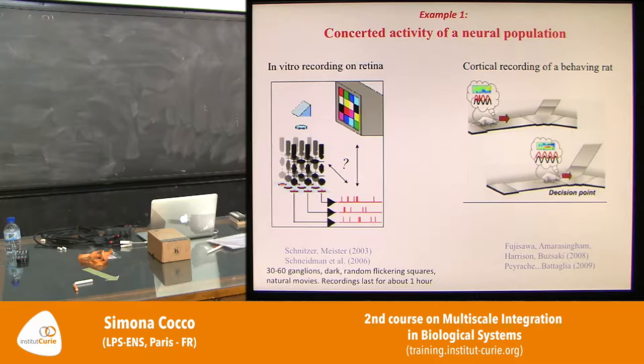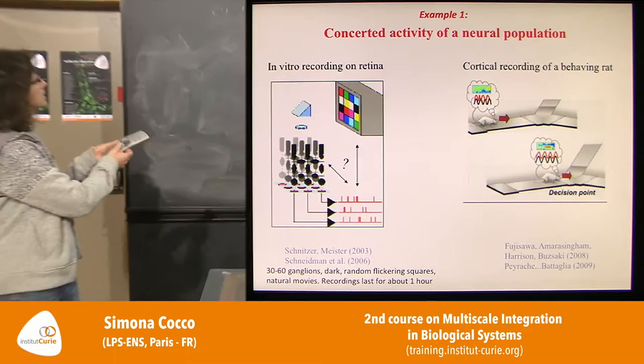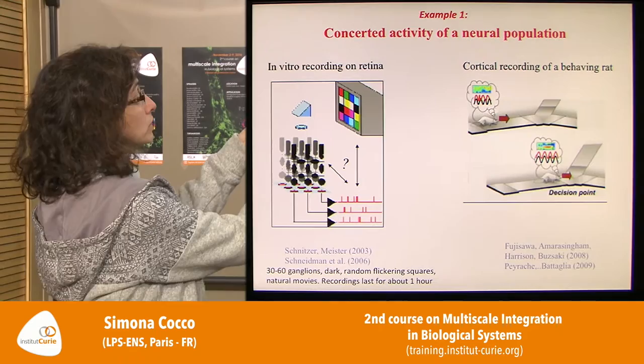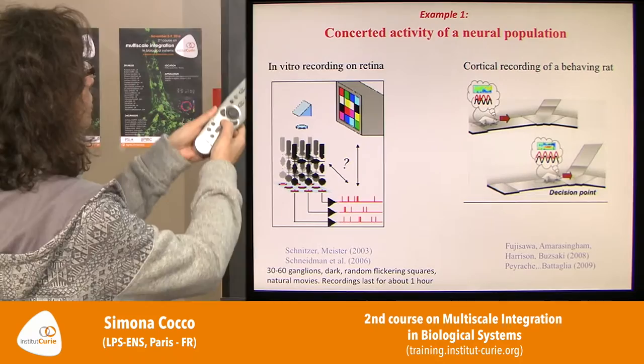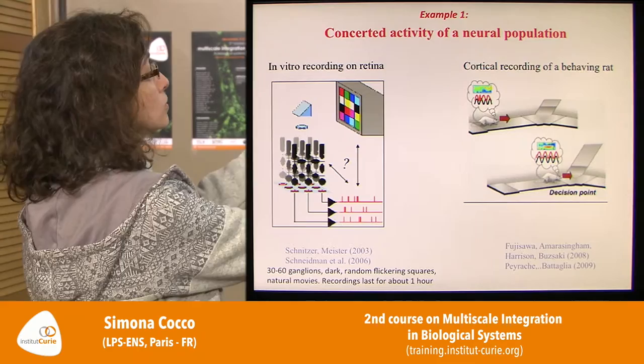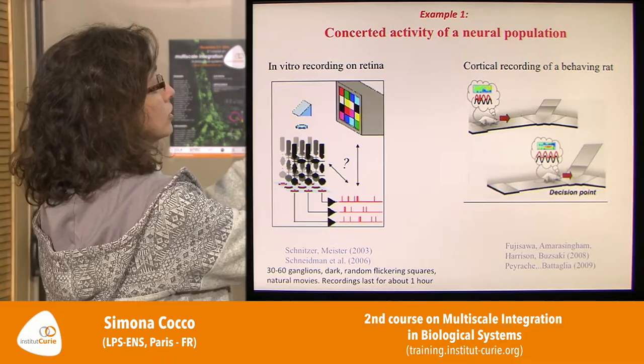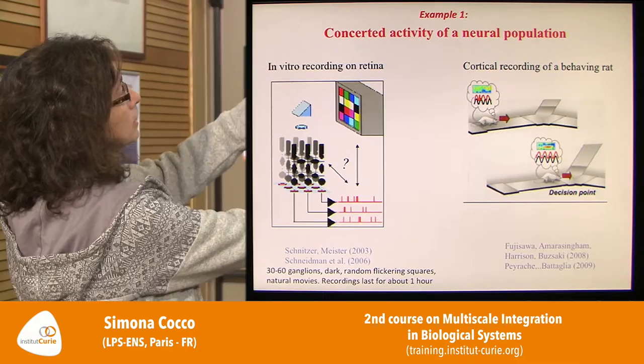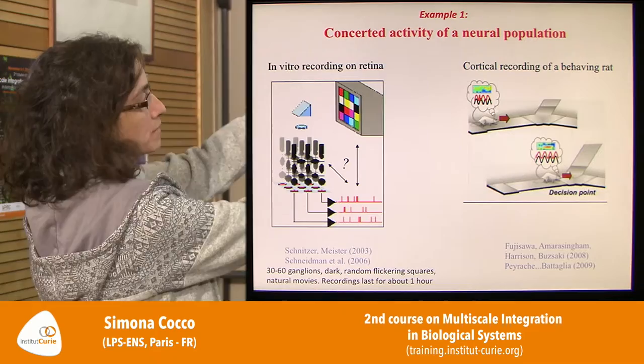One example is neurons of the retina: you can extract the retina from the eye of an animal, and this is a representation of the five layers of the retina. You put it on a multi-electrode array, and from each electrode you can sort the spiking activity of single neurons — represented as action potentials.